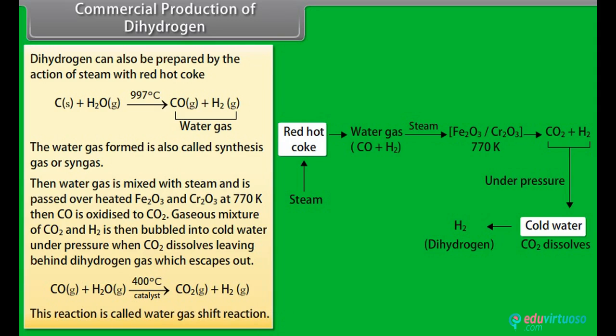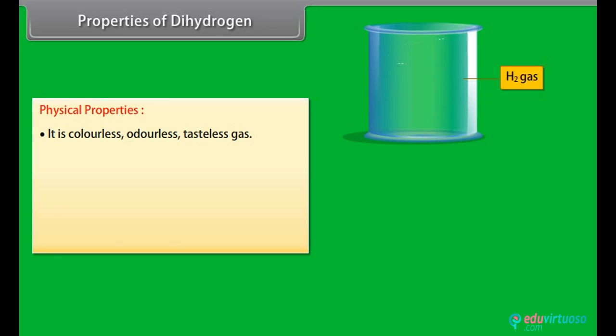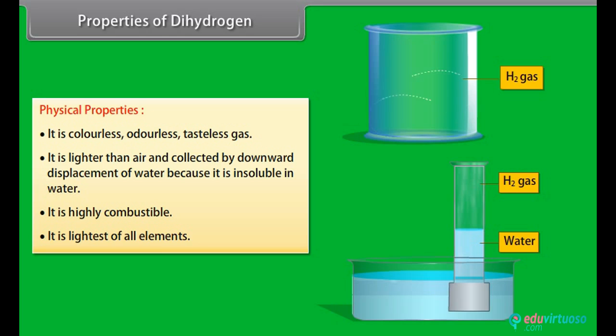Properties of dihydrogen. Physical properties: It is colorless, odorless, tasteless gas. It is lighter than air and collected by downward displacement of water because it is insoluble in water. It is highly combustible. It is the lightest of all elements.